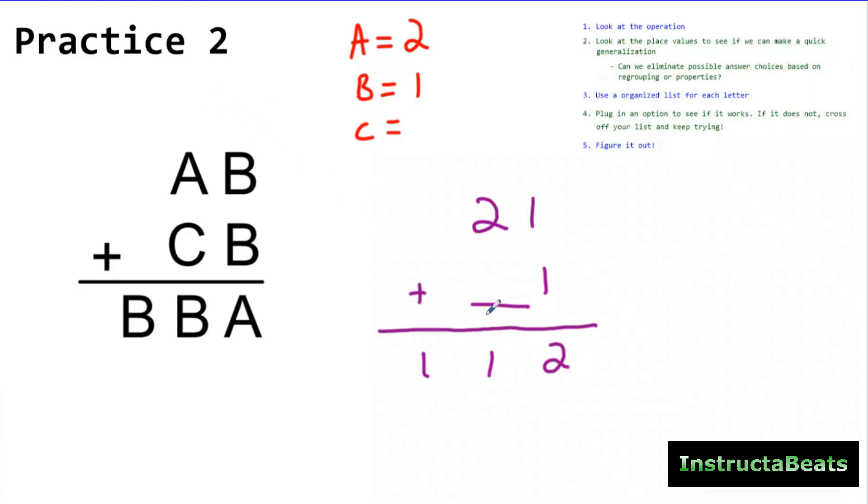Now, we are looking for what C is. Well, I know that when I added 2 to whatever C was, I got 11 because I have a 1 in my 10's place and I had to regroup to put a 1 in my 100's place. Well, what plus 2 equals 11? So C has to be 9 for this one. I didn't even get down to using steps 3 or 4. I just went straight from step 2 to step 5, which is figure it out.